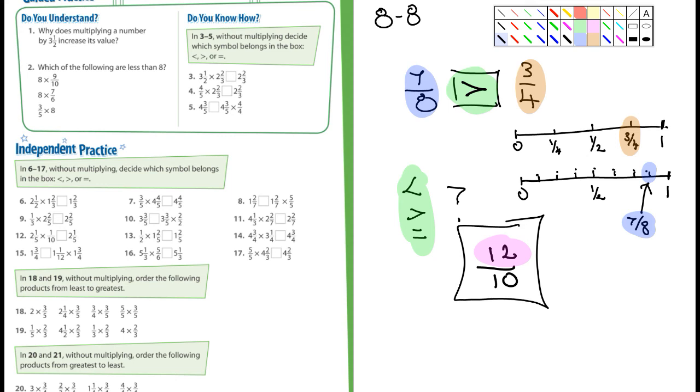Let's look at number 1. It says, why does multiplying by 3 1/2 increase its value? Well, because 3 1/2 is greater than 1. Really, that's the simplest answer. Any number that you'd multiply by another number that's greater than 1, it would get larger.